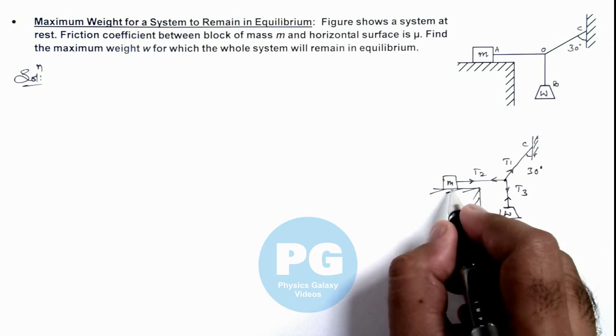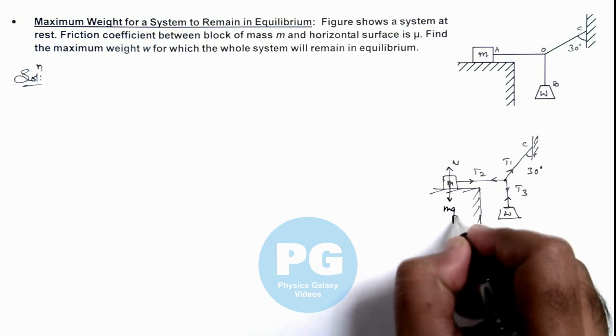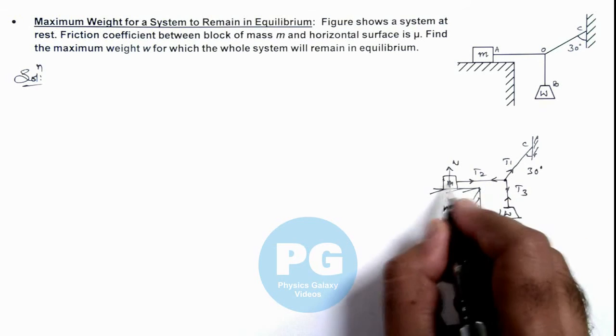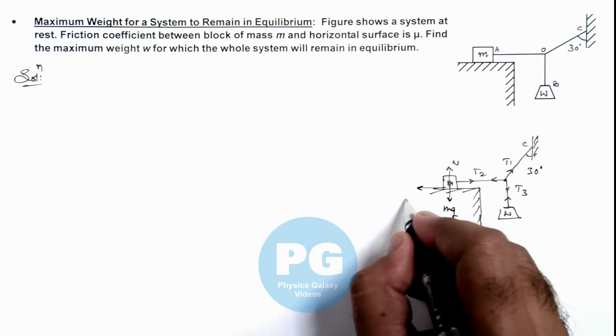So here, the normal reaction acting on the block will be equal to its weight, that is mg. And this t2 will be a force which is providing a sliding tendency, and here it'll experience a friction mu n.